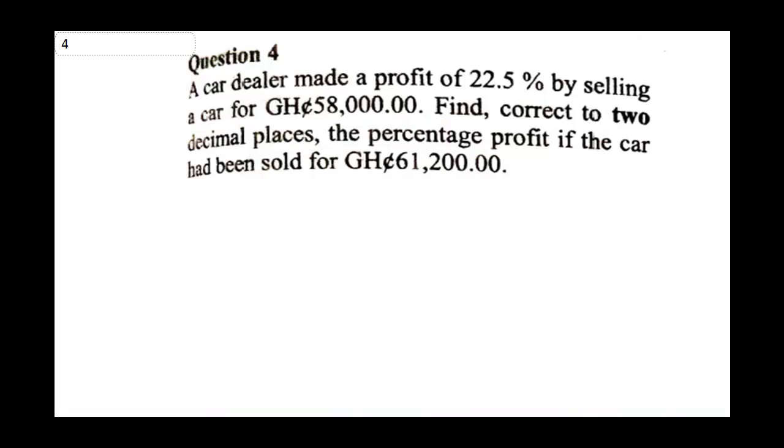Question 4 says a car dealer made a profit of 22.5% by selling a car for 58,000 Ghana cedis. Find, correct to 2 decimal places, the percentage profit if the car had been sold for 61,200 Ghana cedis.